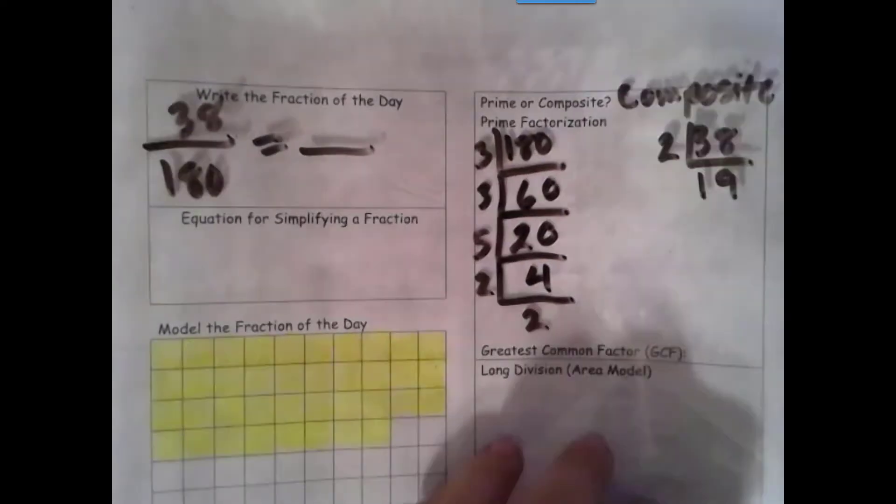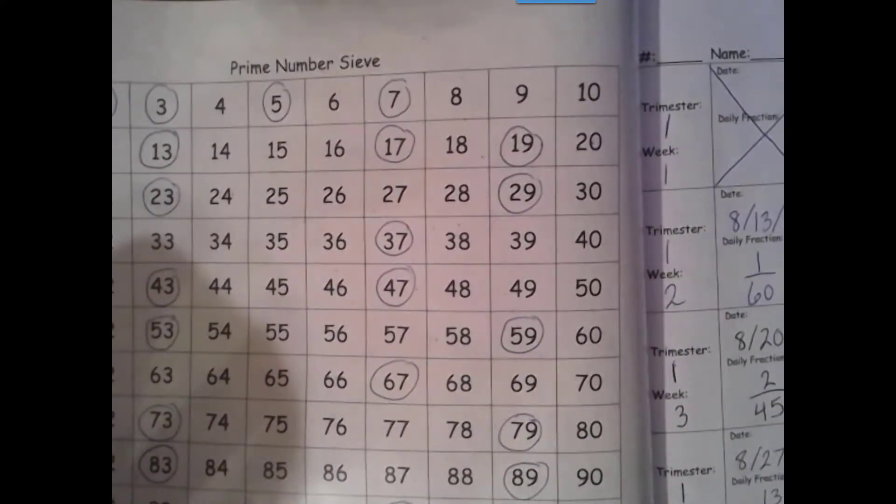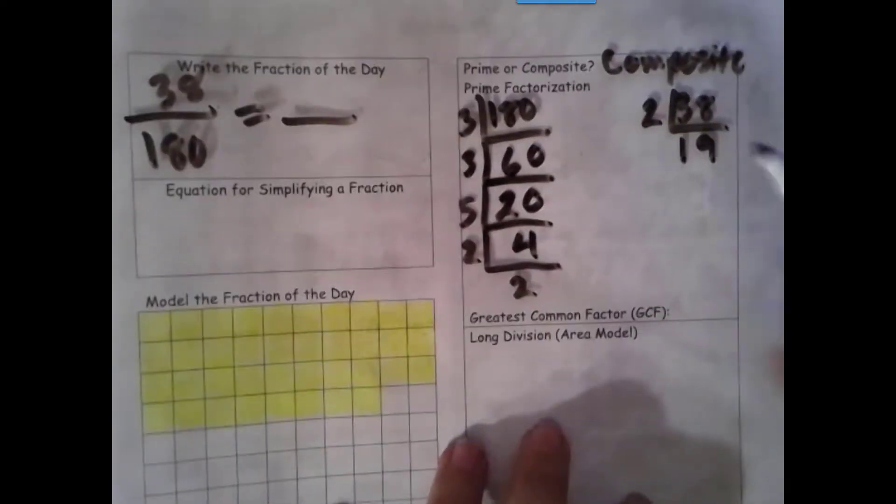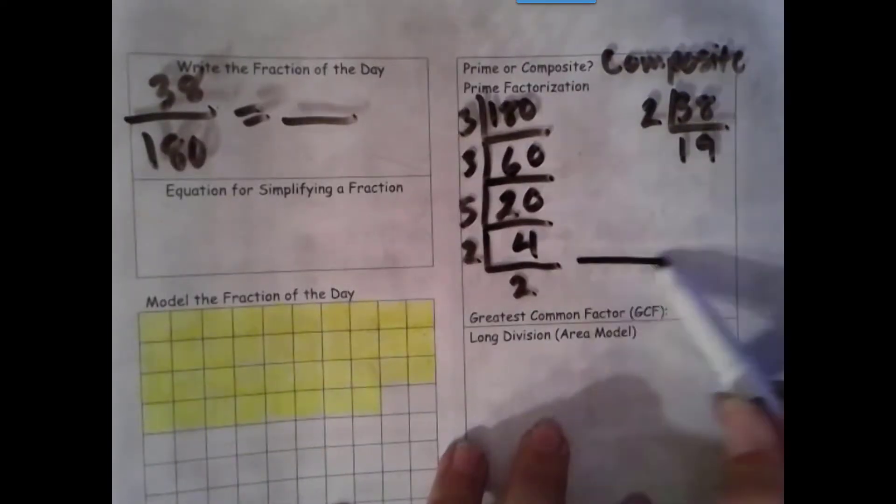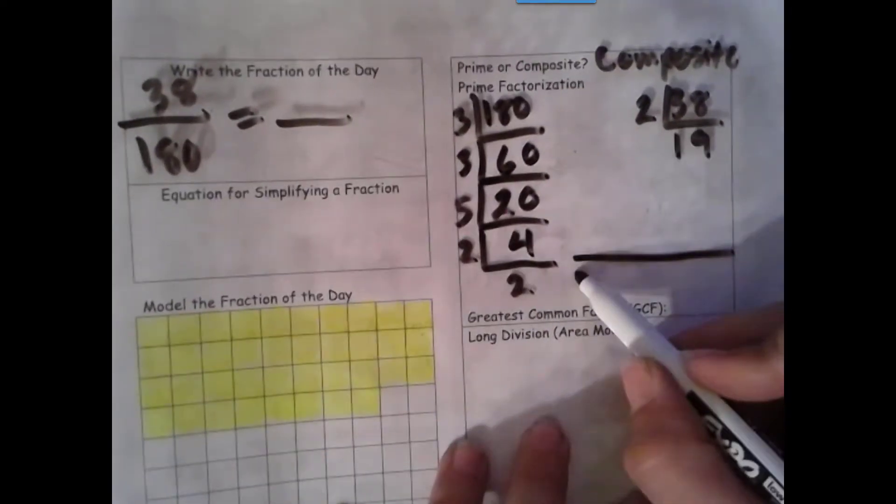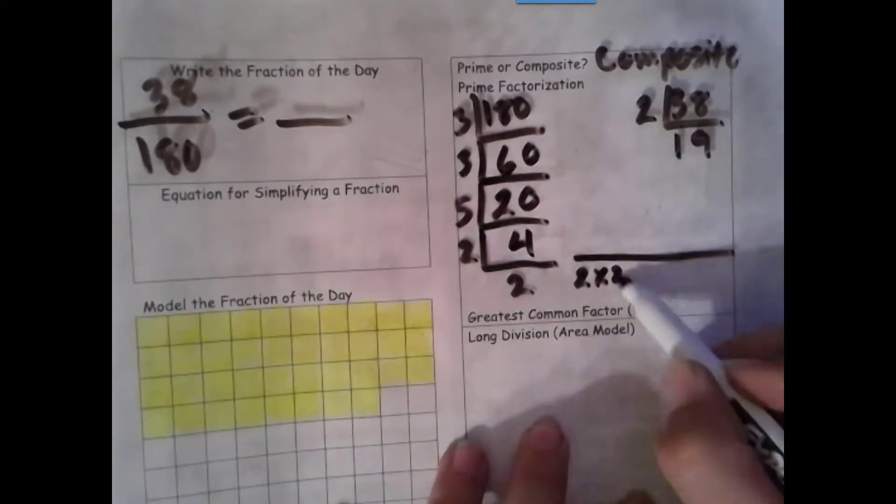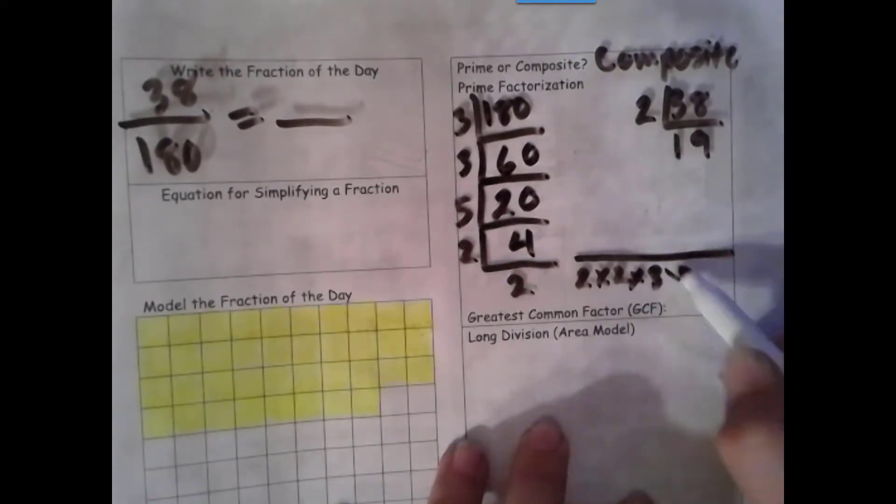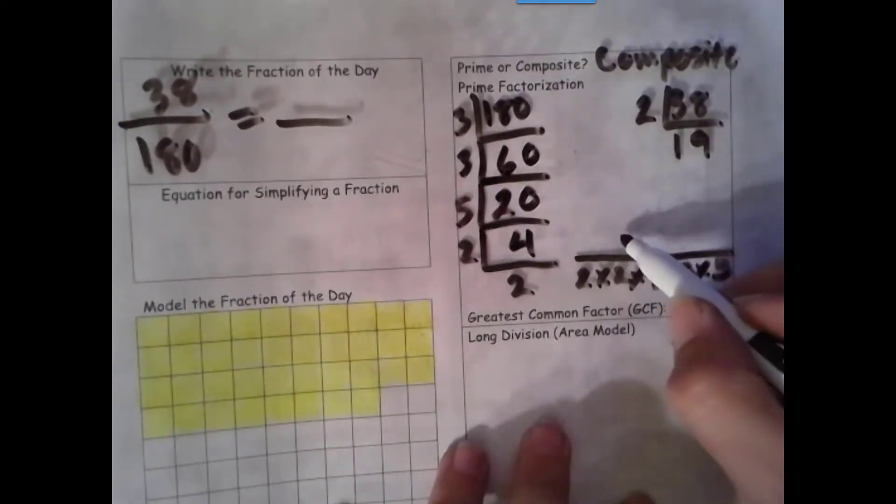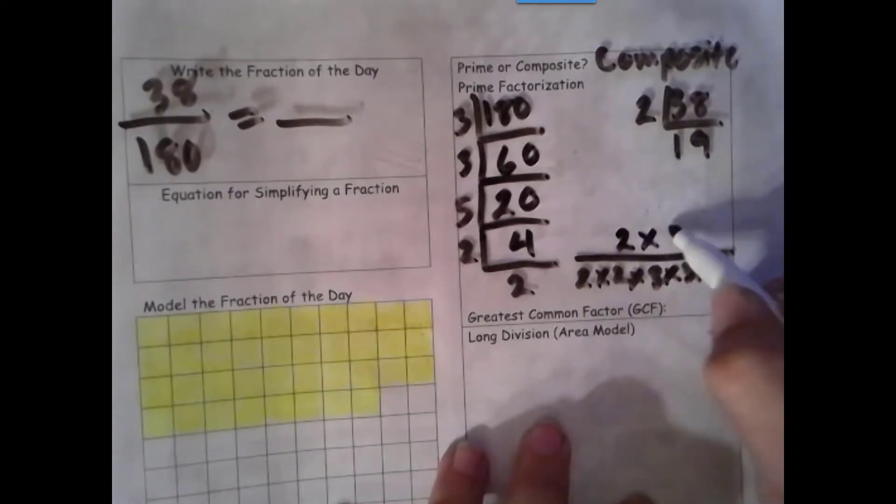And let's see. 19, I think, is prime. Let's check for sure. Yes, 19 is prime, so we're done with our prime factorization there. So let's write down the factorization for our denominator: 2 times 2 times 3 times 3 times 5. Always write from least to greatest. And then our numerator is 2 times 19.